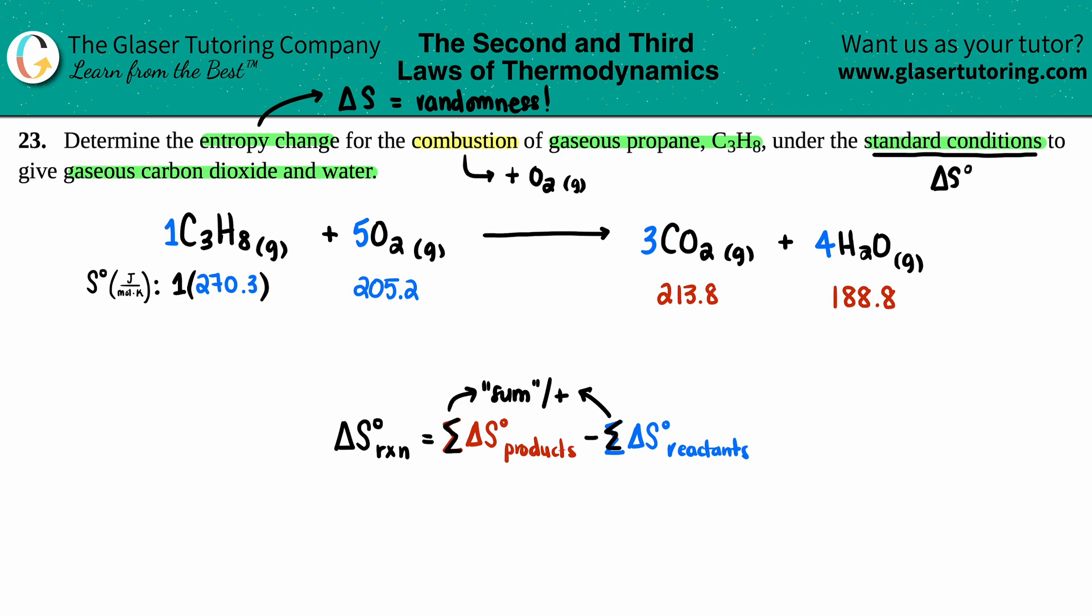There's a five in front of the O2, there's a three in front of the CO2, and a four in front of the H2O. So I'm going to take my 205.2 and times it by five. I'm going to take my 213.8 for the CO2 and times it by three. I'll take the 188.8 and times it by four.